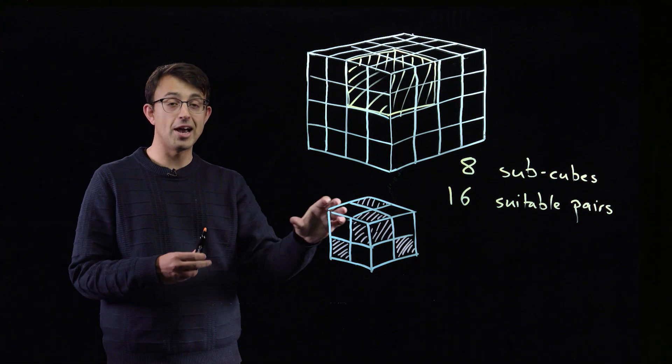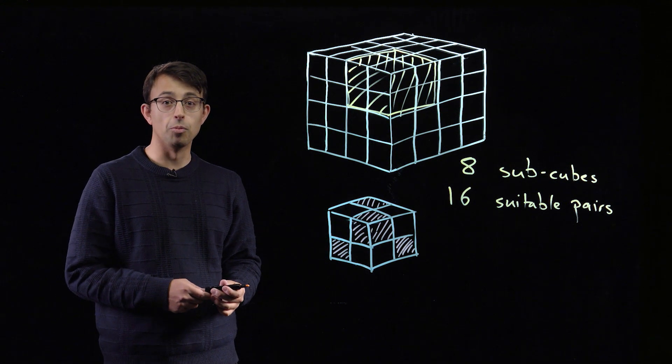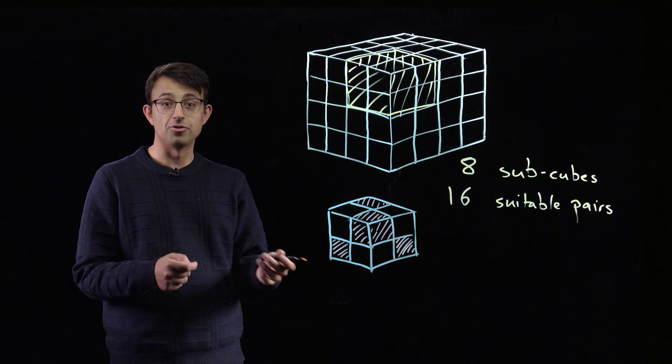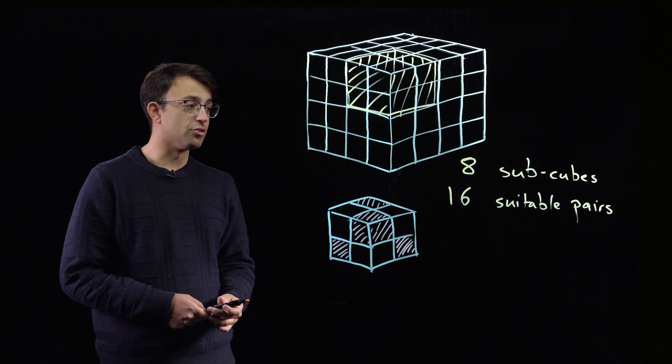The problem is that some of those pairs will both be white, some of them will both be demerara, and some of them will be the third flavour as well.